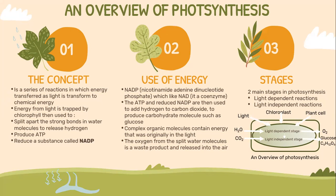An overview of photosynthesis. Photosynthesis is a series of reactions in which energy transferred as light is transformed to chemical energy. Energy from light is trapped by chlorophyll, then used to split apart the strong bond in water molecules to release hydrogen. Energy from light is also used to produce ATP and to reduce a substance called NADP — nicotinamide adenine dinucleotide phosphate — which, like NAD, is a coenzyme. The ATP and reduced NADP are then used to add hydrogen to carbon dioxide to produce carbohydrate molecules such as glucose.